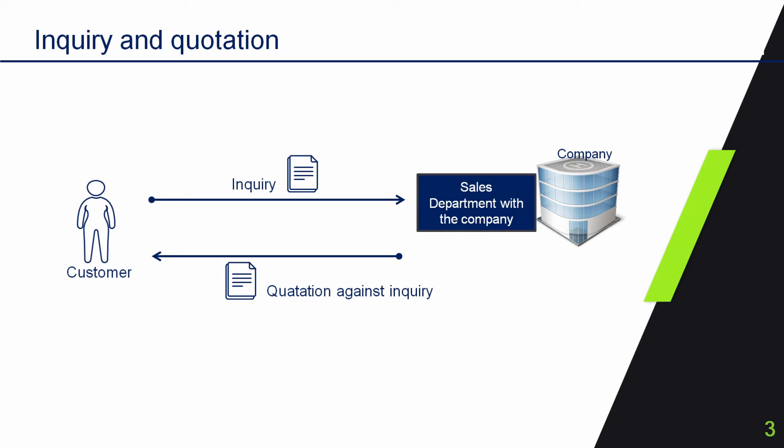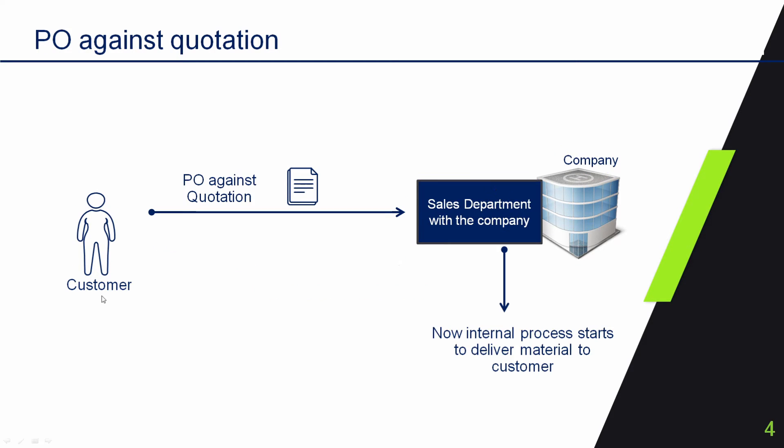The sales department of the company sends a quotation to the customer against the inquiry. The quotation normally may include price of material, delivery conditions, freight charges, payment details, and other terms and conditions. After that, the customer places the PO — that is, purchase order — against the quotation. When the customer issues the PO to the company, there will be several steps within the company to deliver materials to the customer.